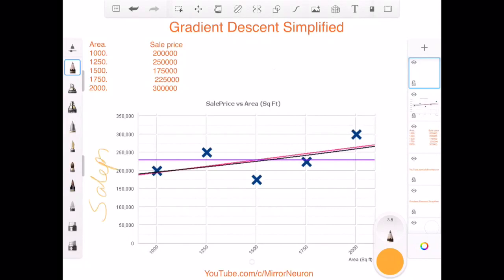The blue crosses that you see here are the original prices for the respective square feet of the house. If I connect the dots, my graph would look something like this - these are the original prices of the house.